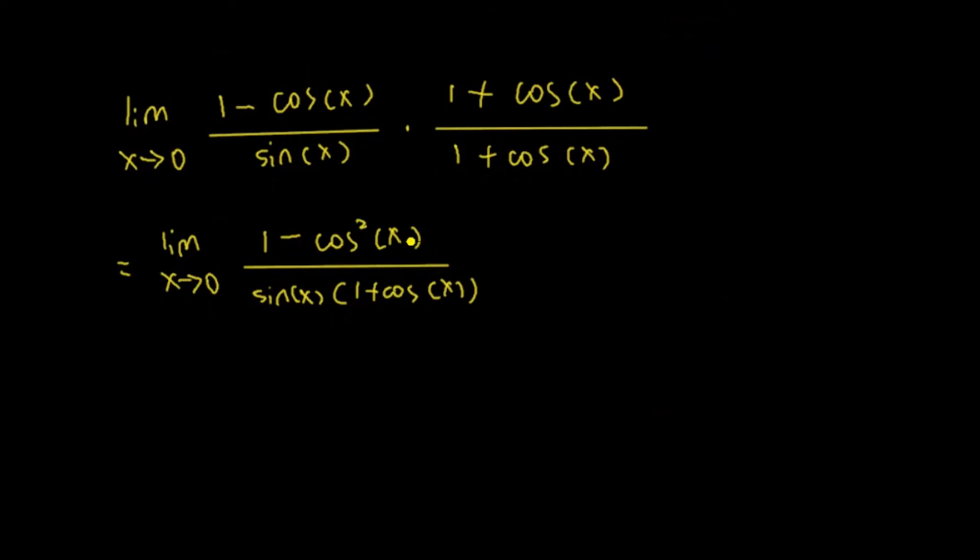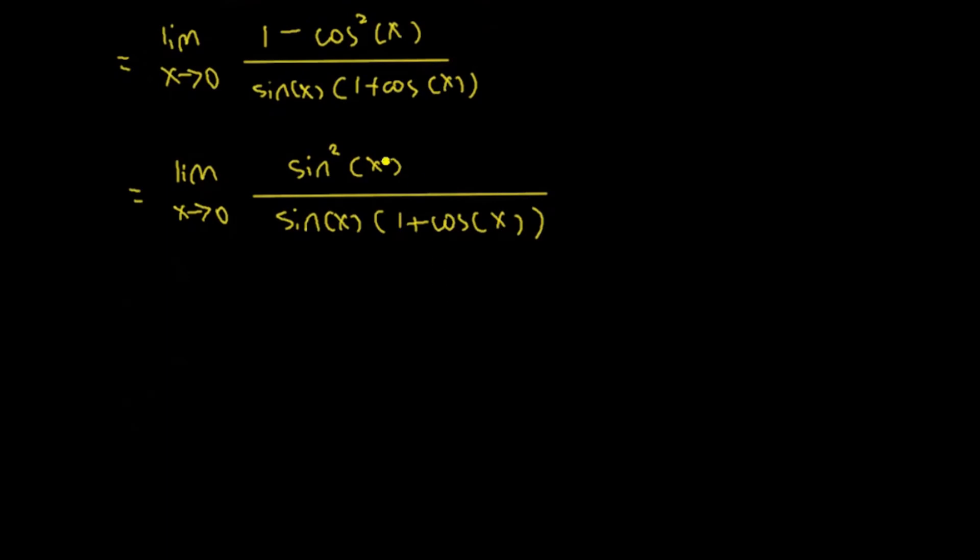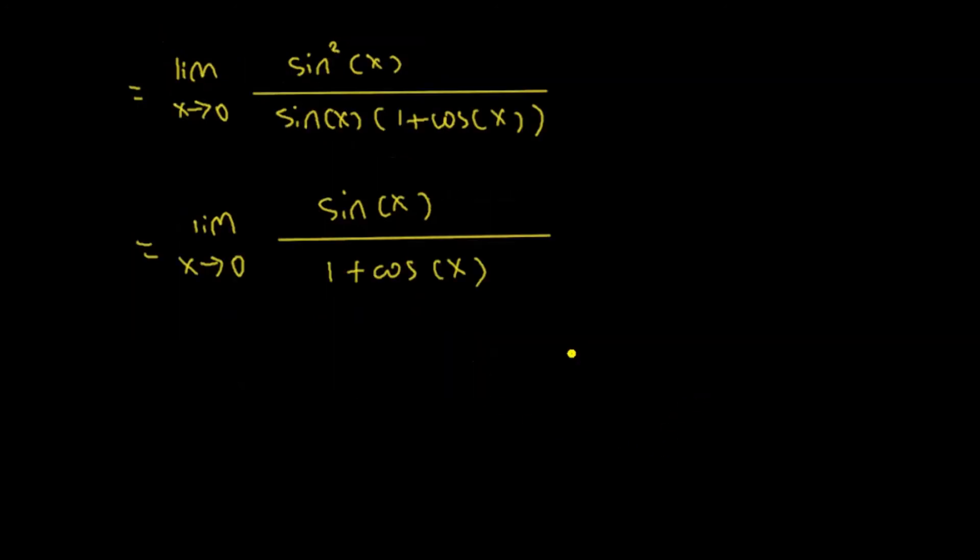1 minus cosine square x is sine square x. We know that from the trigonometry identity. So that is sine square x on the top, divided by sine x times 1 plus cosine of x. Sine square x, one of them, can be cancelled out with the sine x here at the bottom. So we have limit as x approaches 0, the top is just sine x, divided by 1 plus cosine of x left.